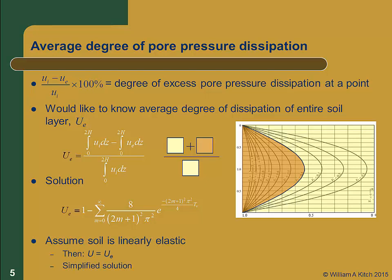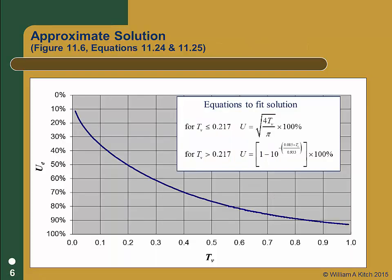If we assume that the soil is linearly elastic, then we can show that the degree of consolidation is equal to the degree of pore pressure dissipation, or U is equal to Ū_e. We call this the simplified solution in your text. Using this solution, we can compute the consolidation settlement at any point in time as the degree of pore pressure dissipation times the ultimate consolidation settlement. The assumption that the soil is linearly elastic is a bit confusing — we're still using our non-linear strain vs. log effective stress curve to determine the ultimate consolidation settlement; we're just using the simplifying assumption to compute the time rate of settlement. As with our other solutions, we can compute the degree of consolidation as a function of our dimensionless time factor, T_v.